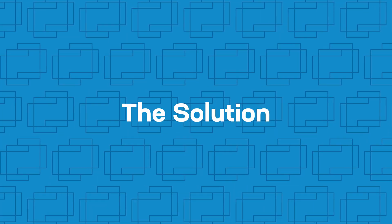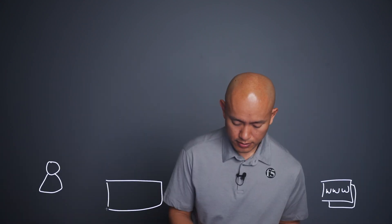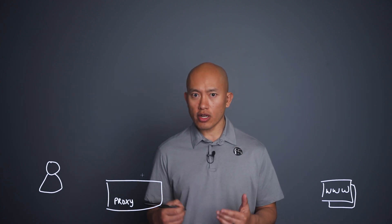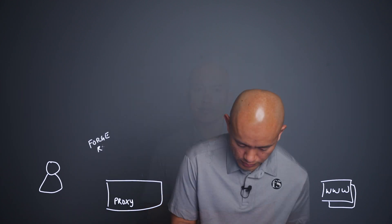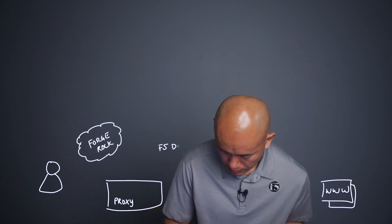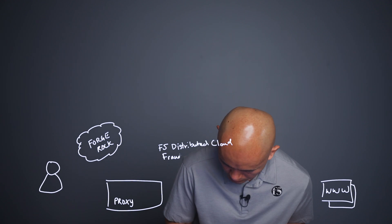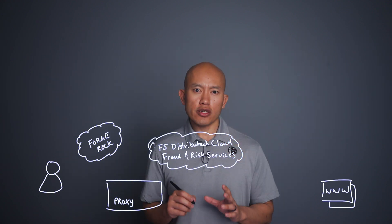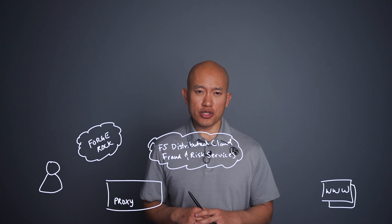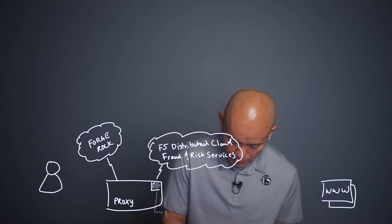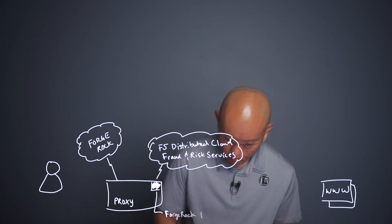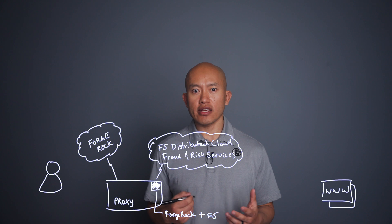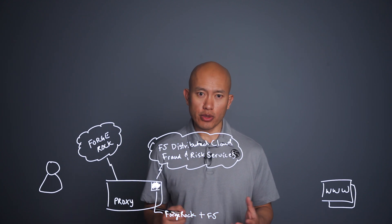Now let's talk about how this solution actually works. Let's start by drawing a web server and a user client. In between this, we're also going to draw a proxy server. ForgeRock is made up of its service as well as being installed on a proxy server, which I'm illustrating here. And then I'm going to draw the F5 Distributed Cloud Fraud and Risk Services. On the proxy server, you're adding an F5 file to the ForgeRock configuration.